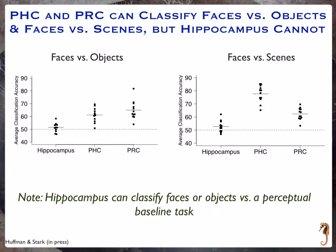In work we've recently done, structures in the parahippocampal cortex and perirhinal cortex can actually classify whether you're looking at a face or an object — we can read out based on the pattern of activity which one you're looking at. We can also read out in parahippocampal and perirhinal cortex whether you're looking at faces or scenes. Whereas in the hippocampus we can't read any of this out — it can't predict what you're looking at at all — which is consistent with the idea of pattern separation. The hippocampus can classify things versus a simple perceptual baseline; it just doesn't show categorical structure.